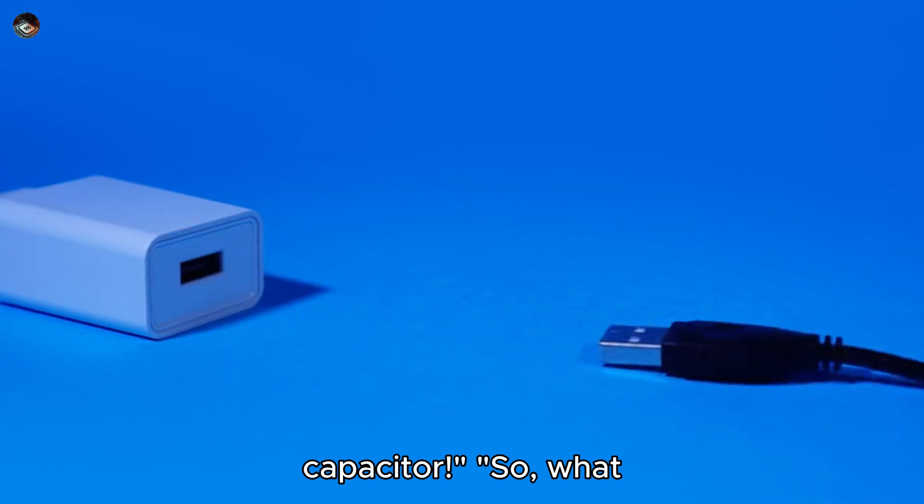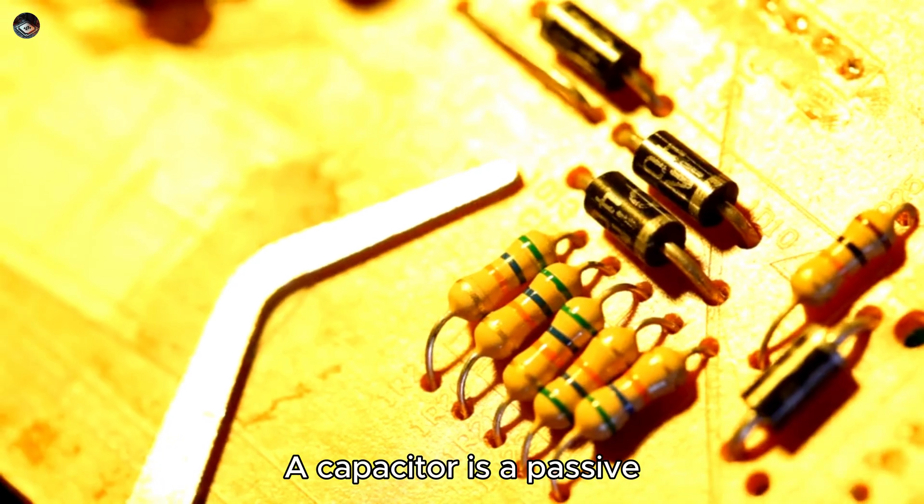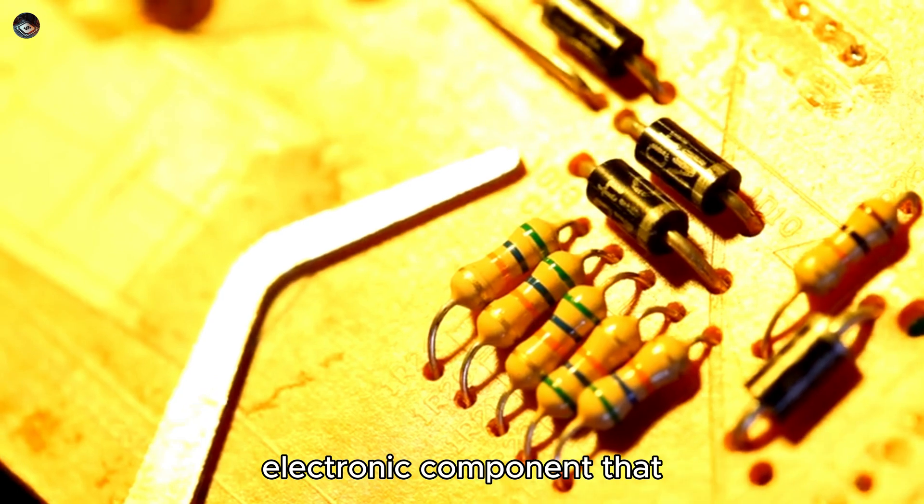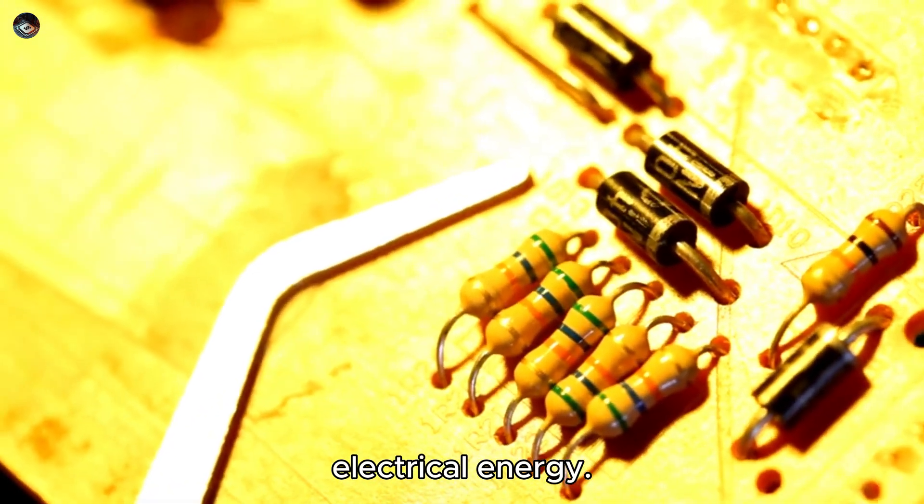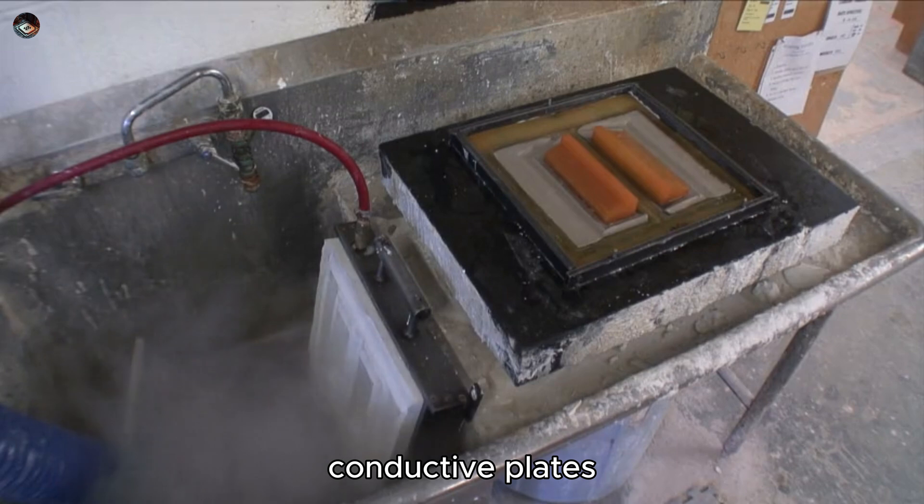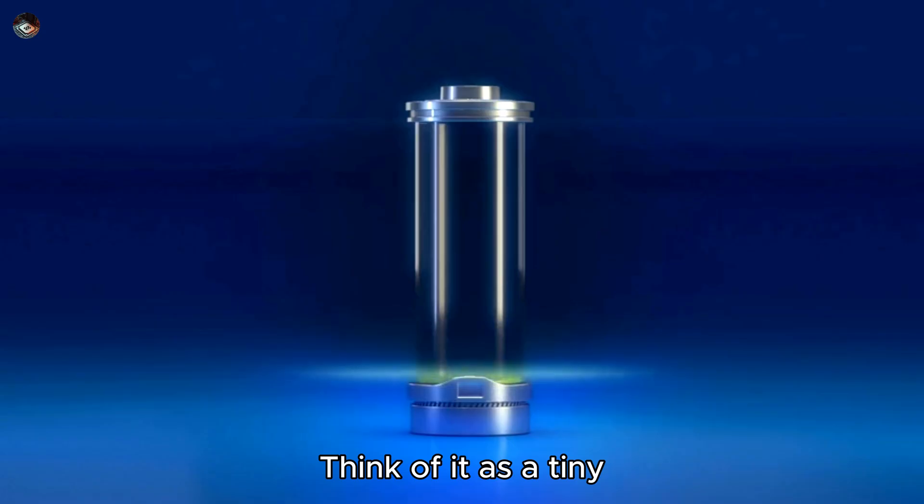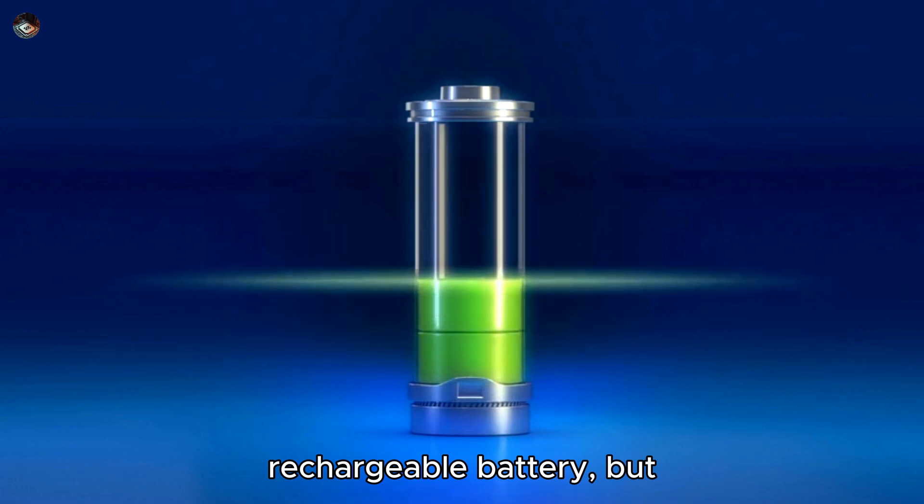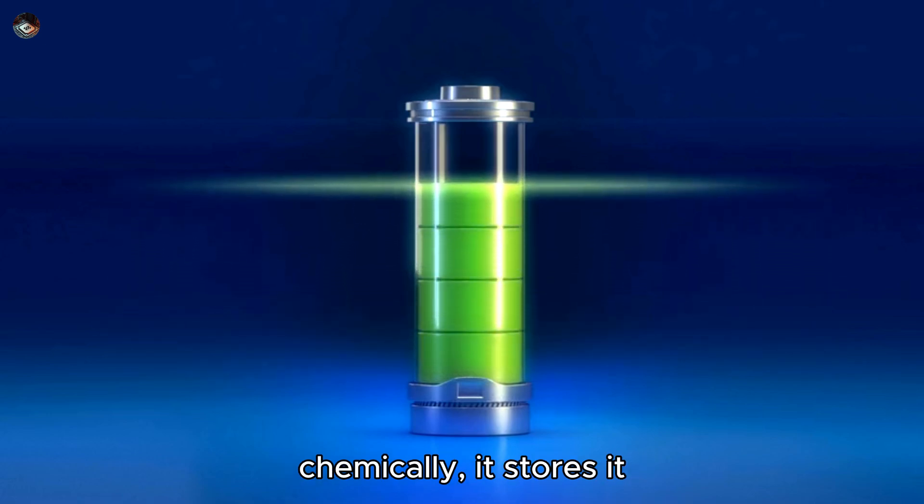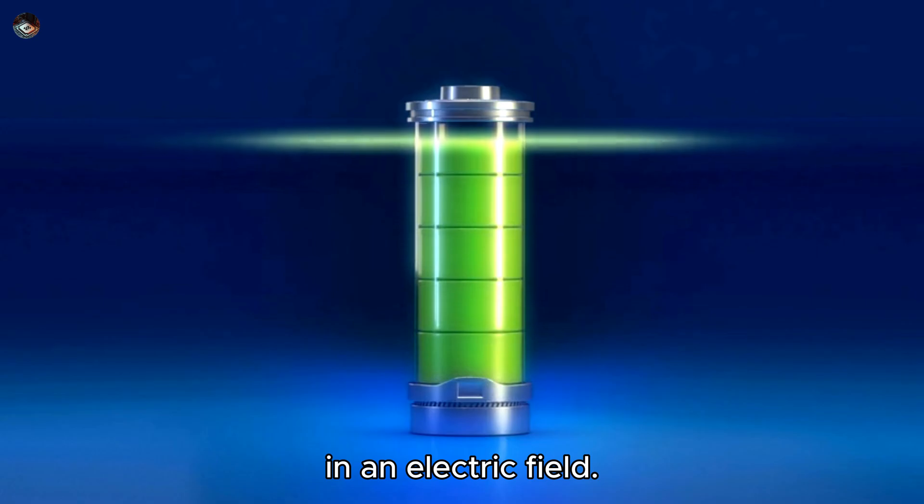So, what exactly is a capacitor? A capacitor is a passive electronic component that stores and releases electrical energy. It's made up of two conductive plates separated by an insulating material called the dielectric. Think of it as a tiny rechargeable battery, but instead of storing energy chemically, it stores it in an electric field.